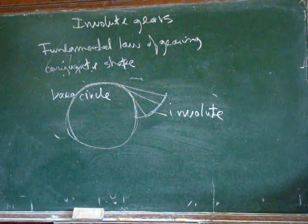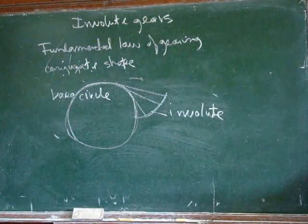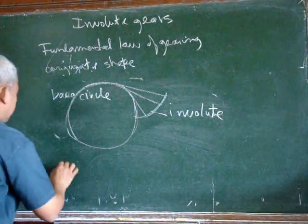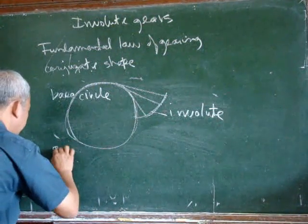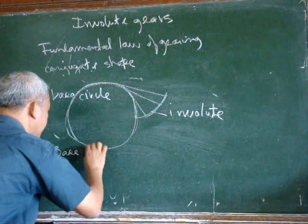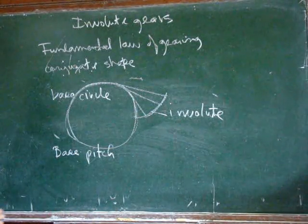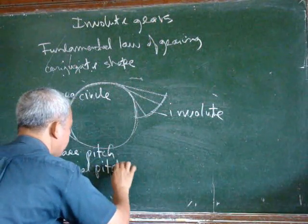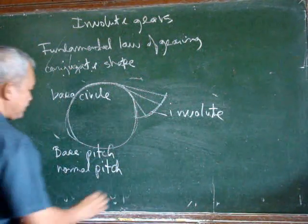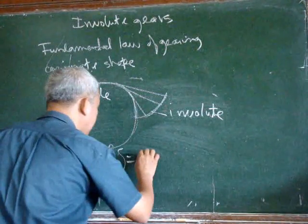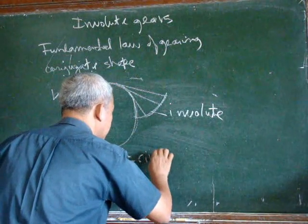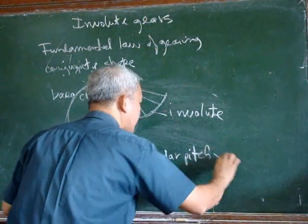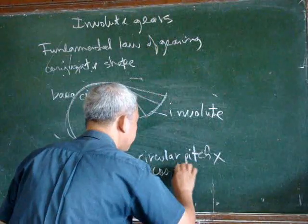We can have other definitions necessary for understanding of involute gearing. We will have our base pitch, also referred to as the normal pitch. This is equal to the circular pitch multiplied by cosine theta.